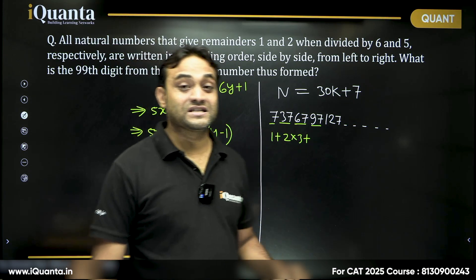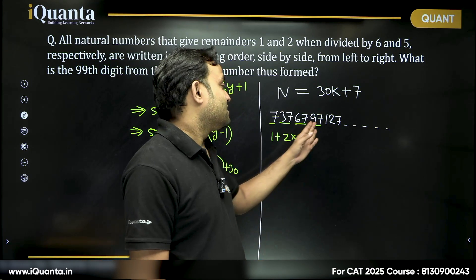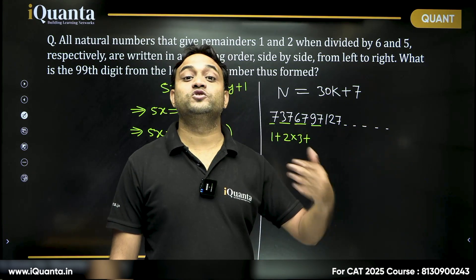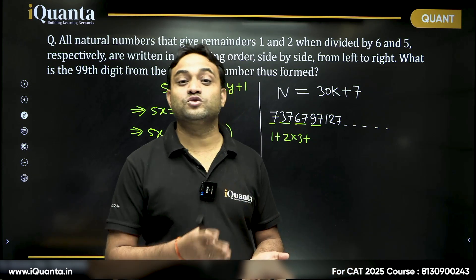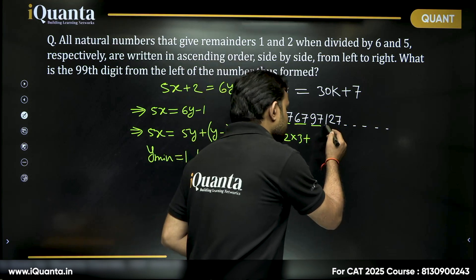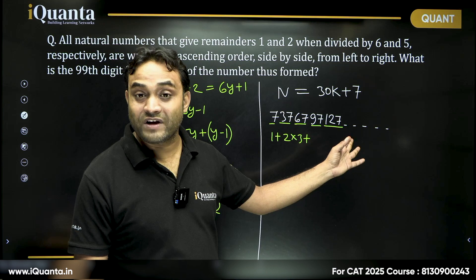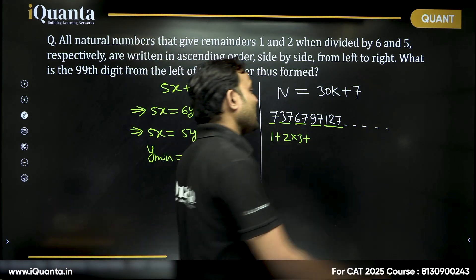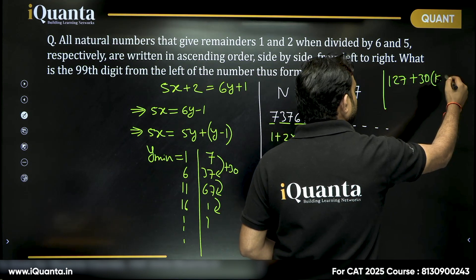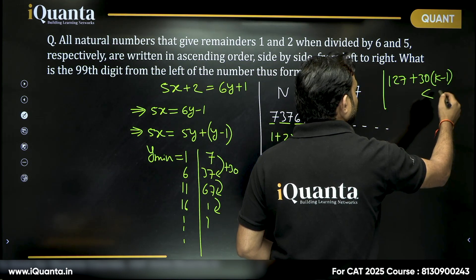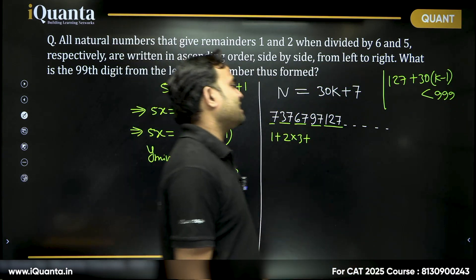Now there will be 3-digit numbers. So total 3-digit numbers, how many 3-digit numbers are there? 900. And the gap is 30. So how many 3-digit numbers will be there? 900 or 30 times 3? Each 3-digit number will have 3 digits. How many such 3-digit numbers will be there? The smallest is 127. What will be the largest? So we can add 127 plus 30k minus 1. This should be less than 999. Less than or equal to but 999 is not that number.